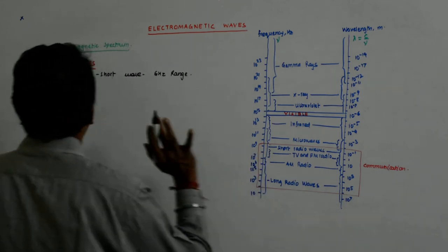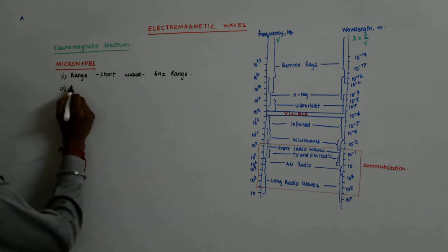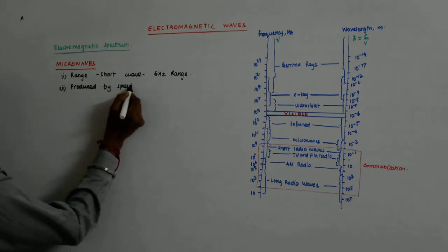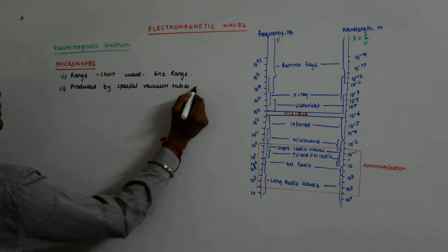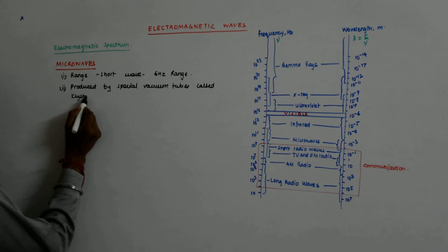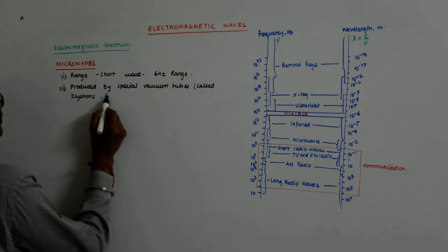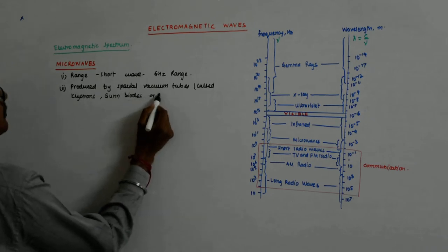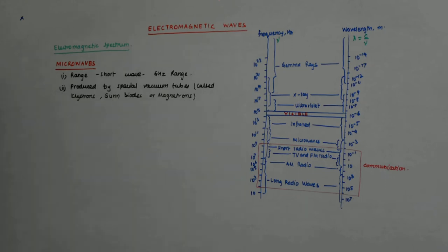They are produced by special vacuum tubes called klystrons, gun diode, and magnetrons.